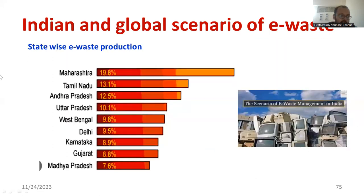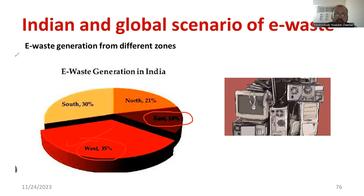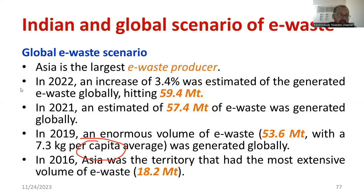Regarding state-wise production, Maharashtra contributes the highest amount of e-waste. Tamil Nadu, Andhra Pradesh, and Uttar Pradesh also contribute large amounts because most industries are concentrated in those territories. Looking at different zones, the western zone has the highest contribution to e-waste production, while the eastern zone and especially the northeast side have comparatively less production.